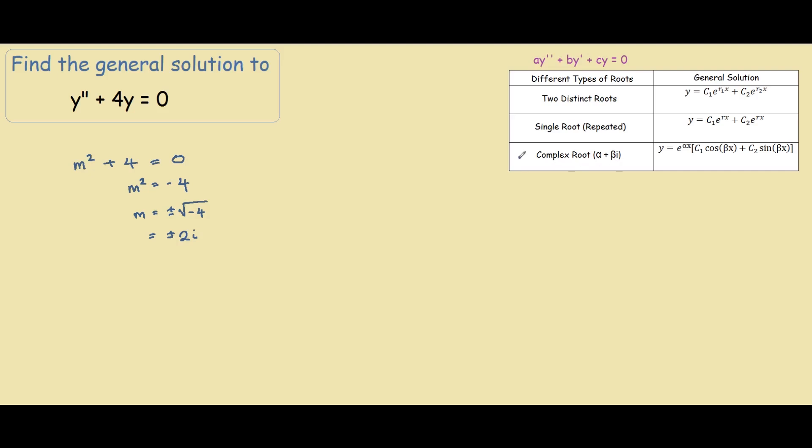So in this case, our m is 0 plus 2i and 0 minus 2i. So as you can see, our alpha is 0, and our beta is 2.